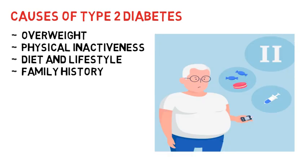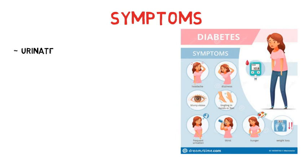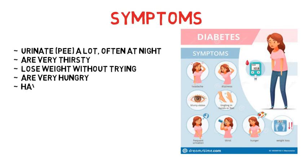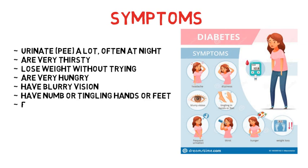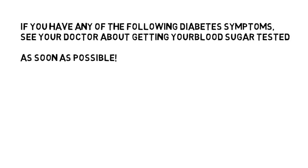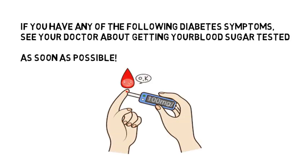Let's see how you can tell if you are diabetic. Symptoms include: urinating a lot or often at night, feeling very thirsty, losing weight without trying, feeling very hungry, having blurred vision, numbness of hands and feet, feeling tired, dry skin, and having more infections than usual. If you have any of these diabetic symptoms, see your doctor about getting your blood sugar tested as soon as possible.